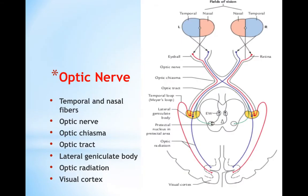Second, we have the optic nerve. The optic nerve originates at the retina of the eye. On both sides we have fibers; here we have temporal or lateral fibers, and here we have nasal or medial fibers. These two types of fibers will be joined to form the optic nerve that passes through the optic canal.